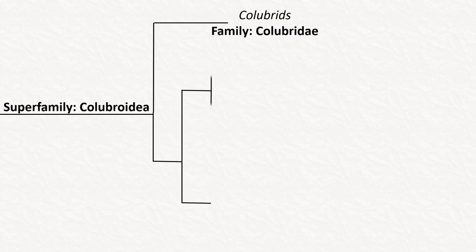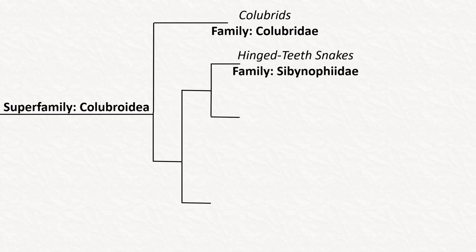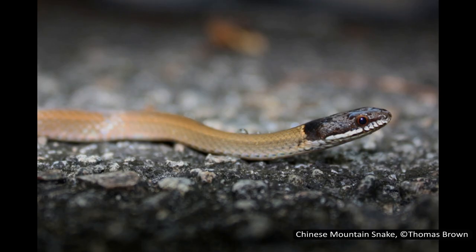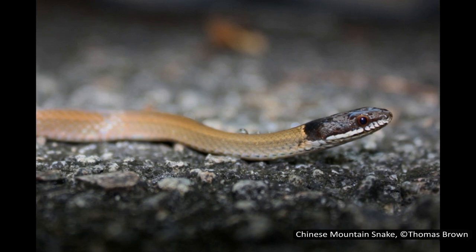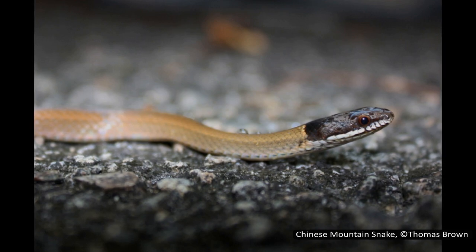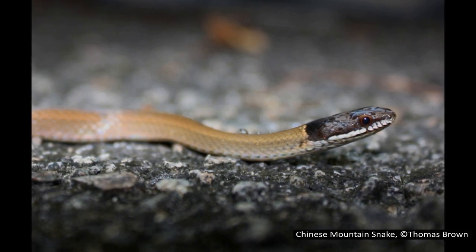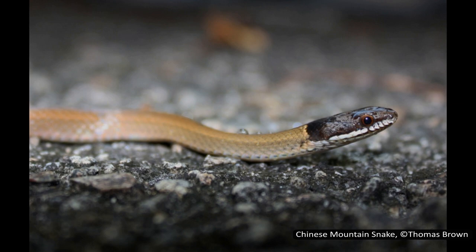The first of the sometimes-separate families is Sibynophiidae, or the hinged-teeth snakes, with two genera and 11 species. The two genera are very geographically isolated from each other — one in Central America and the other in Asia. They range in size from around 30 centimetres or 11 inches to 1 metre or 3 feet, and have very long tails which can account for around half their total length. They are not venomous and eat mostly lizards.